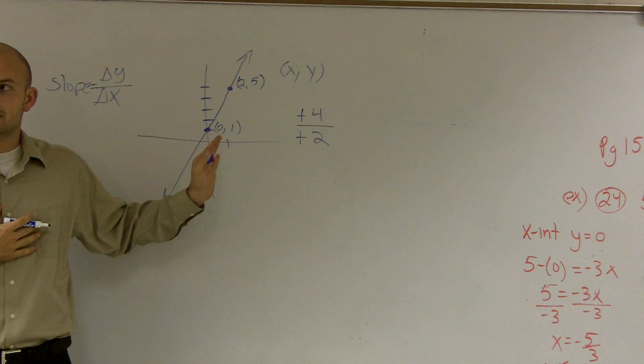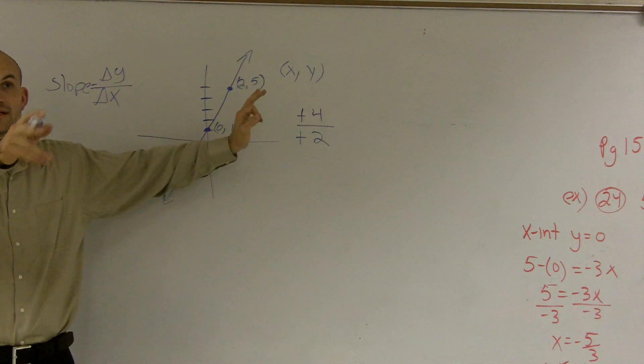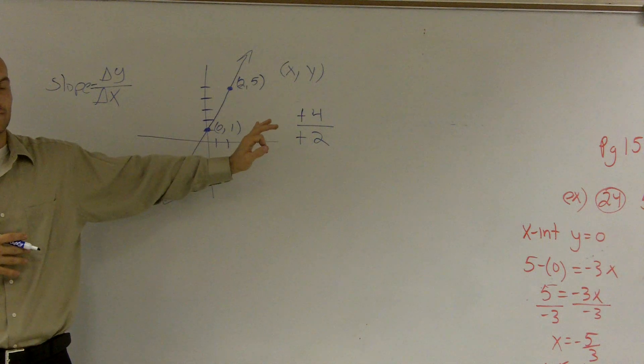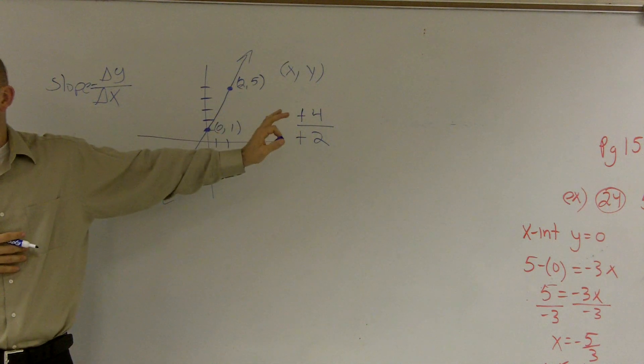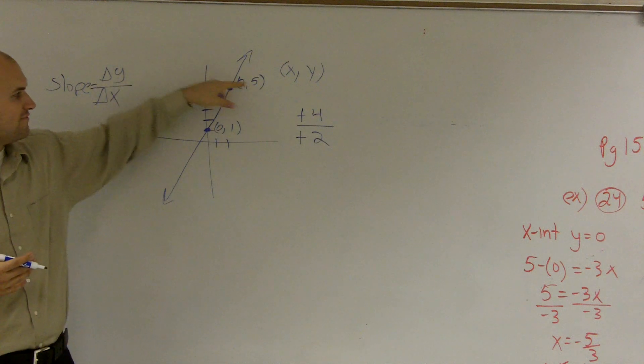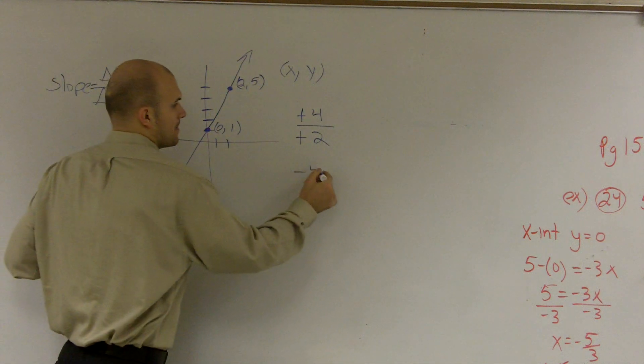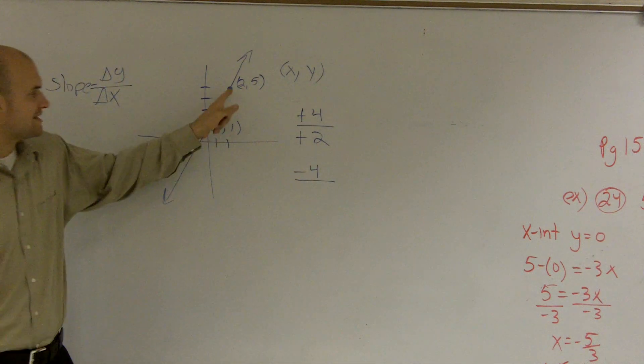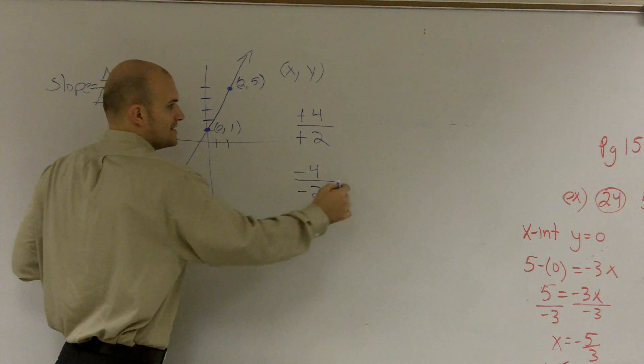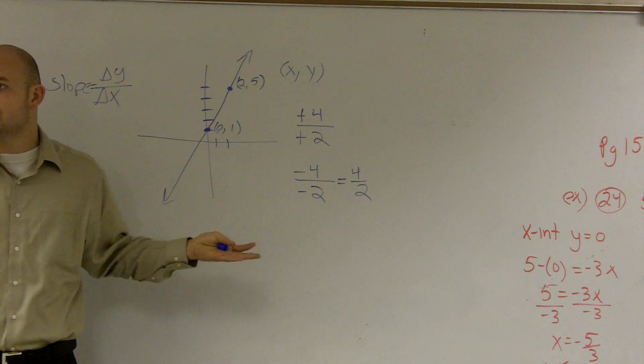Now, that was going from left to right. Now let's look at what if I went from right to left, from this point to this point. If I went from 5 to 1, I had to go down negative 4, right? And then if I go from 2 to 0, I went left 2, which is negative 2. Well, negative divided by negative is still going to be a positive. So it doesn't matter which way you go.